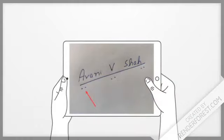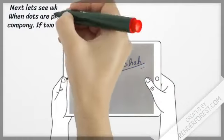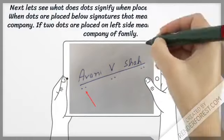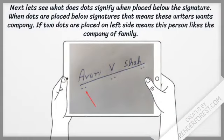Next, let's see what dots signify when placed below the signature. When dots are placed below the signature, it means these writers want company. If two dots are placed on the left side of the signature, it means this person likes the company of family.